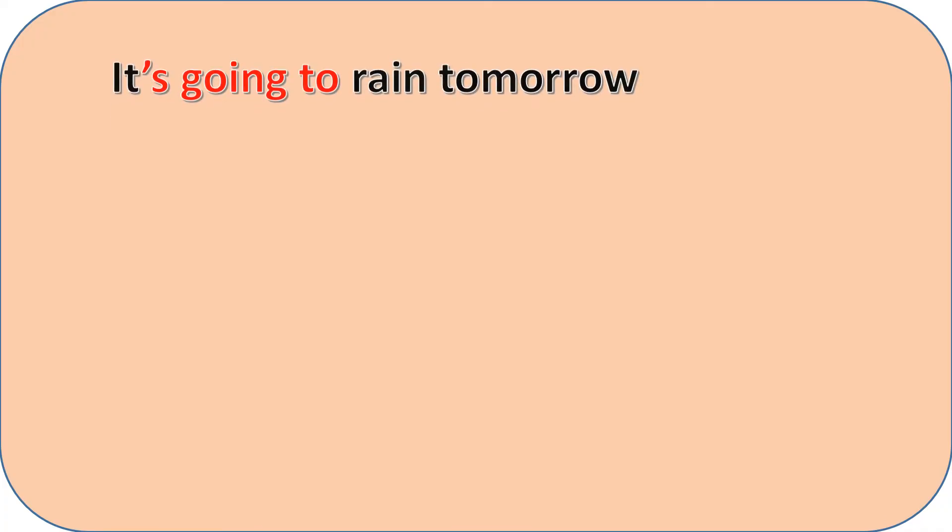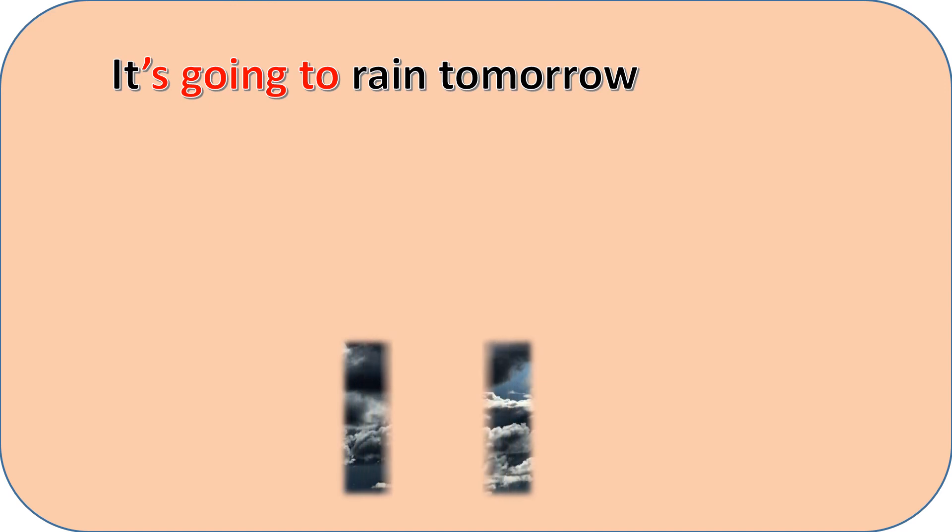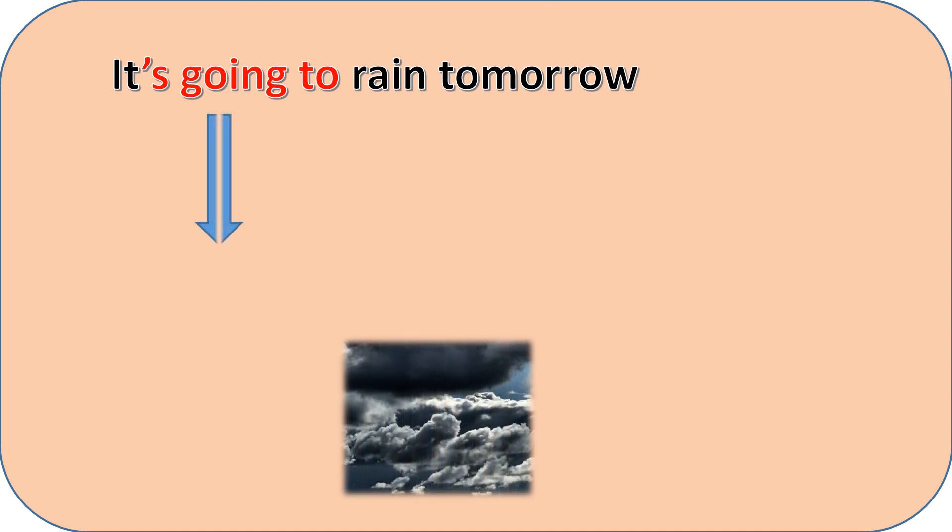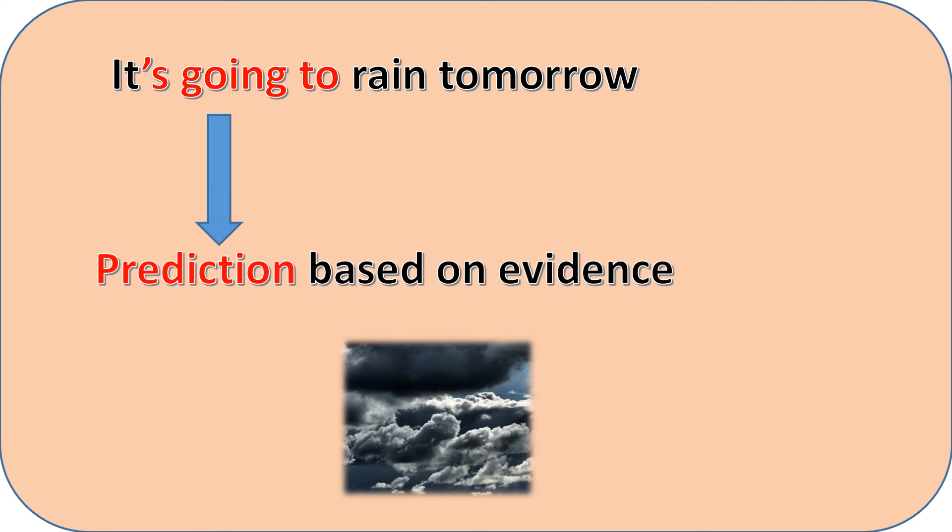If I say it's going to rain tomorrow, here I'm making a prediction. When we use going to, it's a prediction based on evidence. Maybe I see that the sky is full of thick dark clouds, which makes me almost sure that it's going to rain.